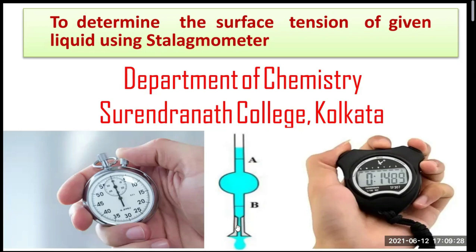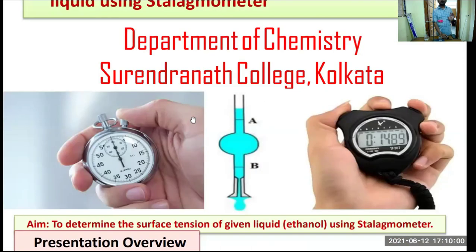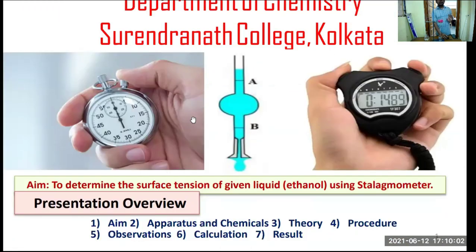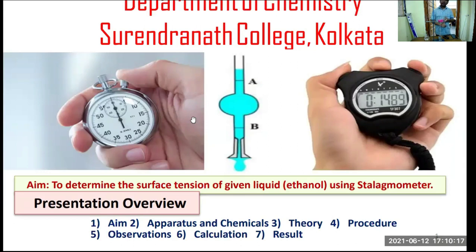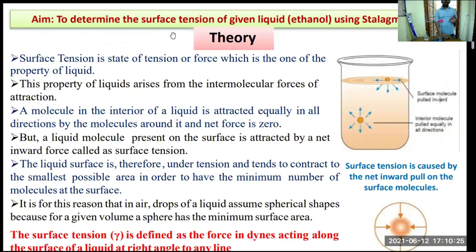Allow 10 to 15 drops per minute for better instrument performance. The aim of this experiment is to determine the surface tension of a given liquid using a stalagmometer. The presentation overview covers chemicals, laboratory observations, calculations, and results.